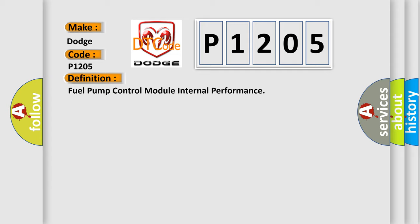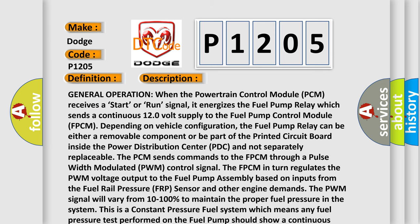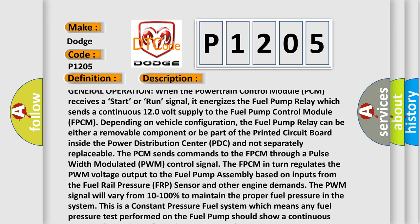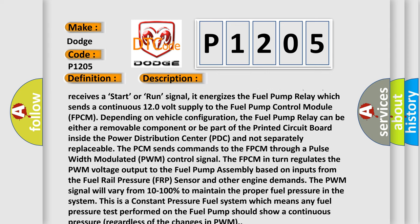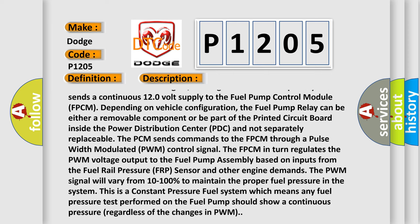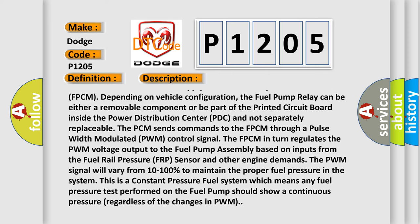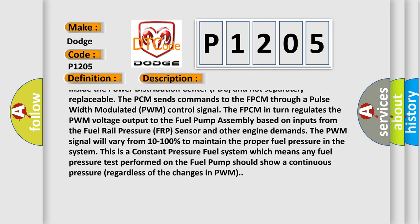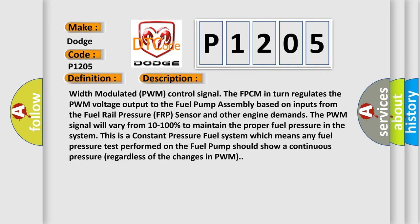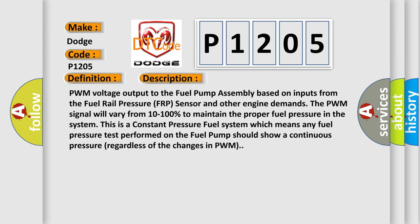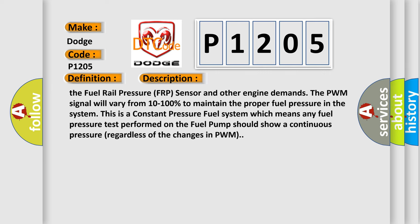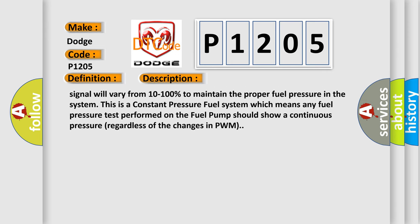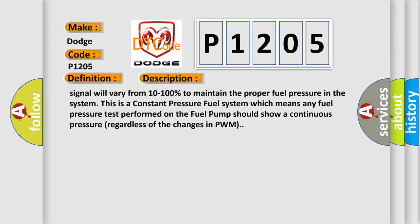Here is a short description of this DTC code. When the powertrain control module (PCM) receives a start or run signal, it energizes the fuel pump relay, which sends a continuous 120-volt supply to the fuel pump control module (FPCM), depending on vehicle configuration. The fuel pump relay can be either a removable component or part of the printed circuit board inside the power distribution center (PDC) and not separately replaceable. The PCM sends commands to the FPCM through a pulse width modulated (PWM) control signal. The FPCM in turn regulates the PWM voltage output to the fuel pump assembly based on inputs from the fuel rail pressure (FRP) sensor and other engine demands. The PWM signal will vary from 10 to 100% to maintain proper fuel pressure in the system. This is a constant pressure fuel system, which means any fuel pressure test performed on the fuel pump should show a continuous pressure regardless of changes in PWM.